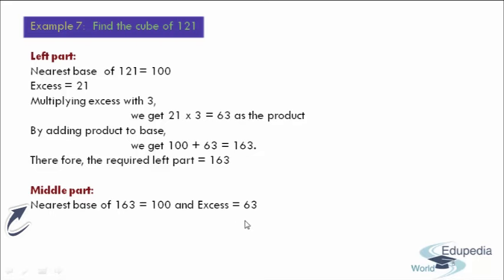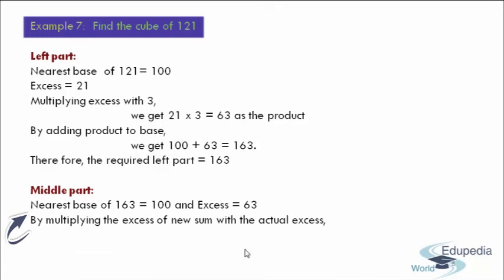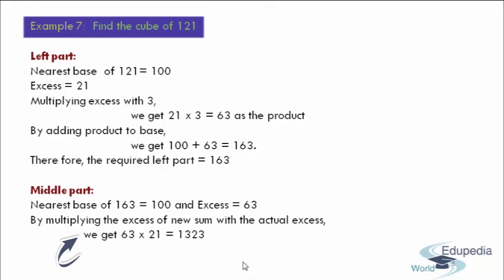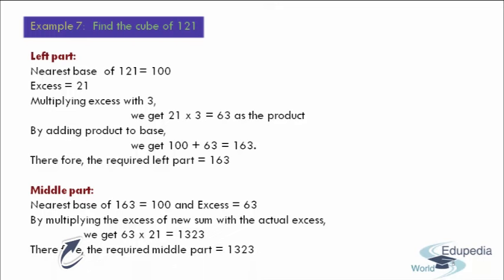After finding these two things, moving to step number 2, what we have to do is we have to multiply the excess of the new sum with the actual excess. Here the excess of the new sum is 63 and the actual excess is 21. So therefore by multiplying 63 into 21, we get 1323. And this 1323 is regarded as the required middle part.